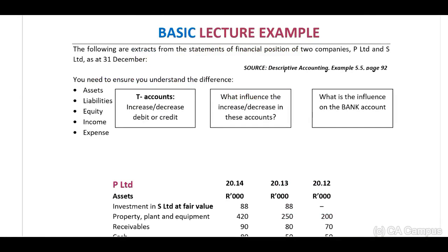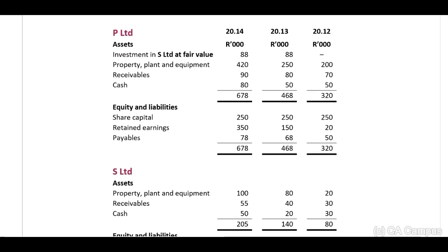We are now going to work through a basic lecture example. The following are extracts from the statements of financial position of two companies, P Limited and S Limited, as at 31 December. Before looking at the statement of financial position, ensure you understand the difference between assets, liabilities, equity, income and expenses - T-accounts, increases, decreases, debit side, credit side - and what influences the bank account.